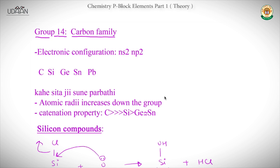Now we move towards group 14, which is also called the Carbon family. The general electronic configuration is ns² np². The elements of group 14 are Carbon, Silicon, Germanium, Tin, and Lead. Atomic radius increases as we go down the group.